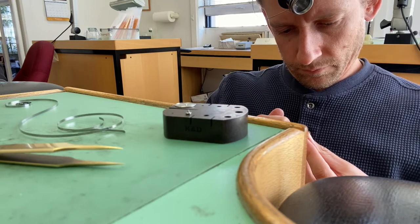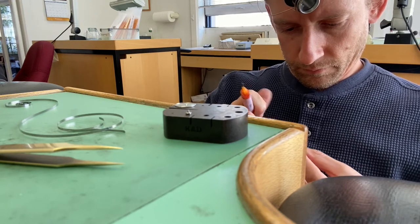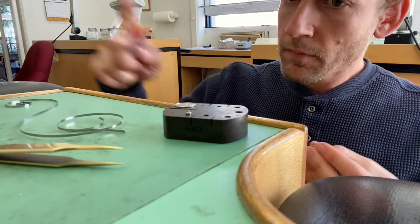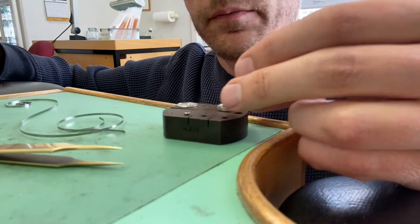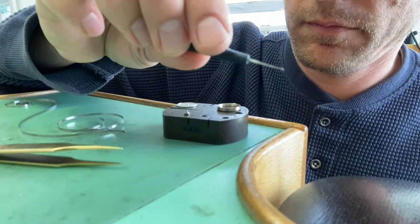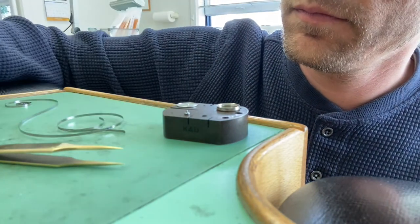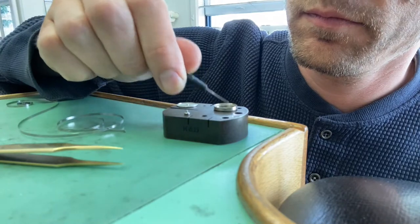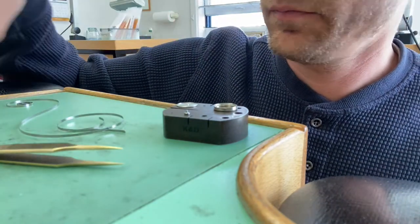But now you know the orientation of all your parts. So you have your mainspring sitting correctly, your barrel arbor is right side up, and I'm just adding a little bit of oil to the bottom of the barrel before I do the install.